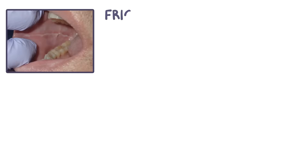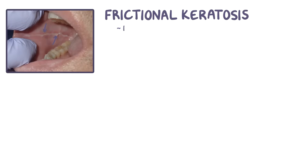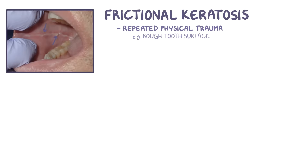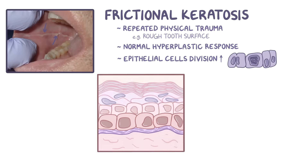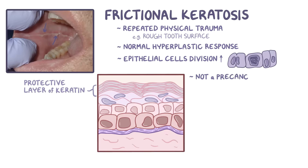A lesion that looks like leukoplakia but isn't is an area of frictional keratosis. That's where there's repeated physical trauma like rubbing of the tooth surface against the mucosa of the cheeks — for example, after a dental procedure that leaves a rough tooth surface, or a broken tooth rubbing against the mucosa. It's a normal hyperplastic response, meaning that the epithelial cells in the area divide more than usual and build up a protective layer of keratin, kind of like developing a callus on your hands after spending the weekend raking leaves. An area of frictional keratosis is not a precancerous lesion, and usually fades away once the irritation stops.